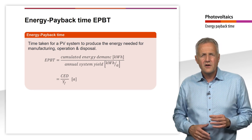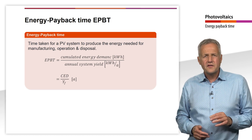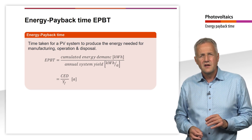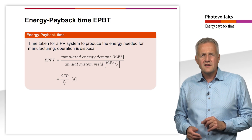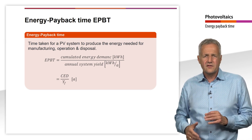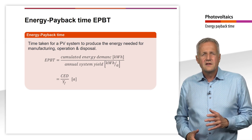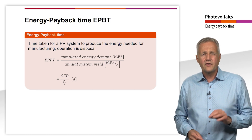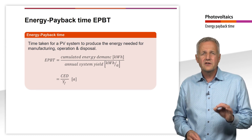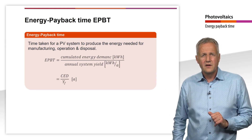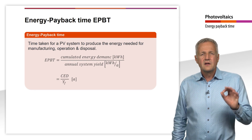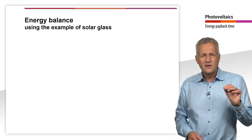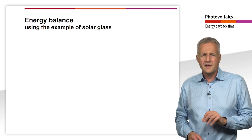As we have seen in earlier chapters, the annual yield of a system depends very much on its location. The efficiency of the modules also plays a role. The cumulative energy input of a solar system must be calculated for each component of the solar system. In the following, we will calculate the cumulative energy consumption using solar glass as an example.